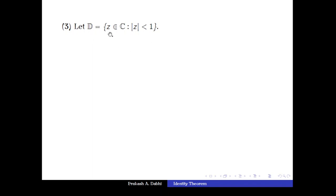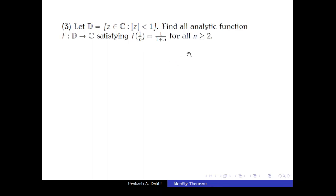Now another example. We let D denote the open unit disk in the complex plane: D = {z ∈ ℂ : |z| < 1}. We want to find all analytic functions f from D to ℂ satisfying f(1/n) = 1/(1+n) for n ≥ 2. Note n ≥ 2 because the point 1 is not in the open disk.